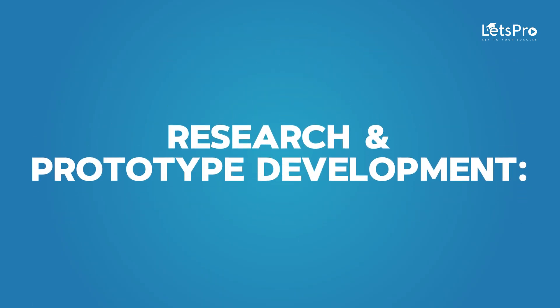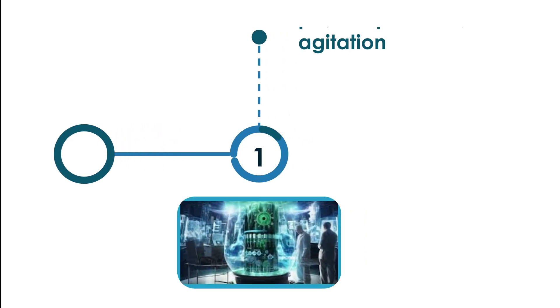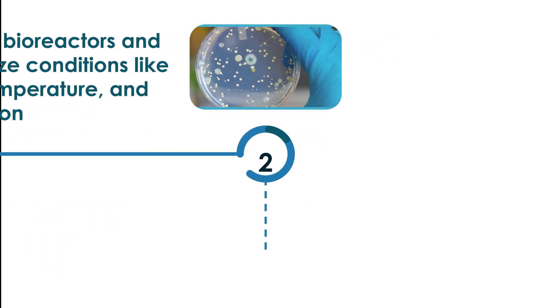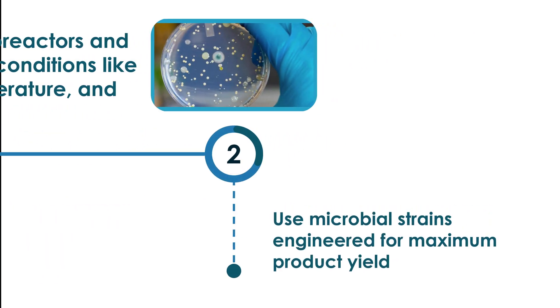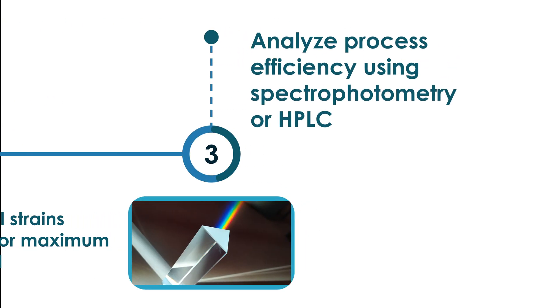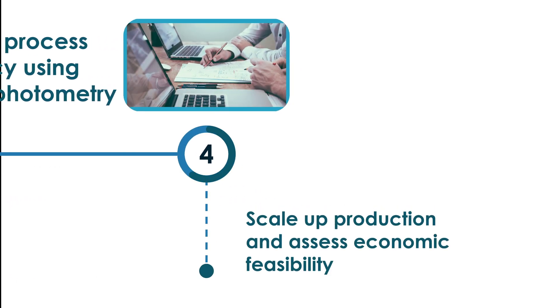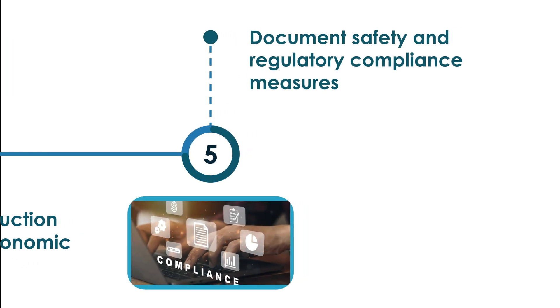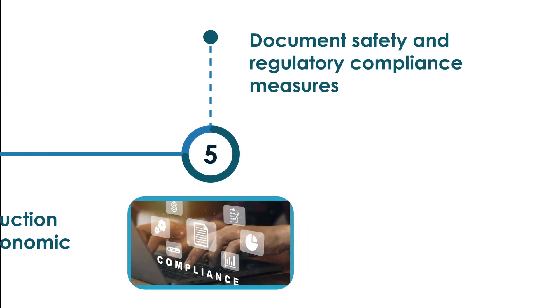For research and prototype development: set up bioreactors and optimize conditions like pH, temperature, and agitation; use microbial strains engineered for maximum product yield; analyze process efficiency using spectrophotometry or HPLC; scale up production and assess economic feasibility; and document safety and regulatory compliance measures.